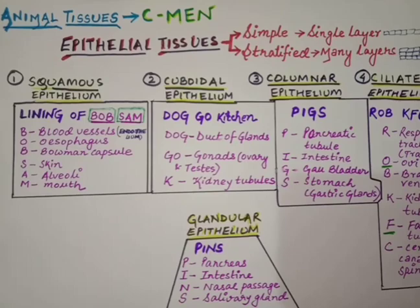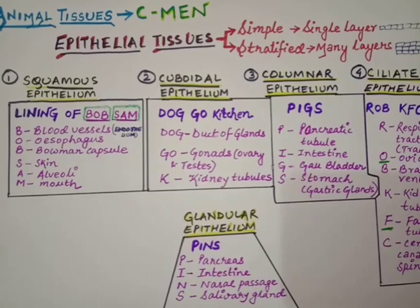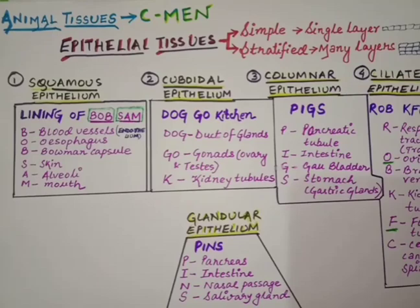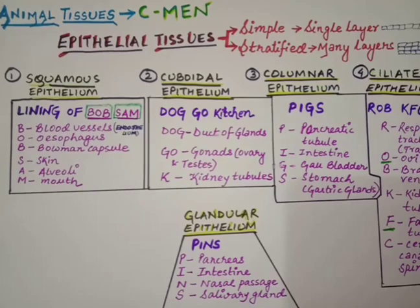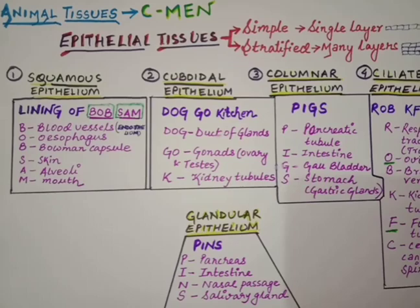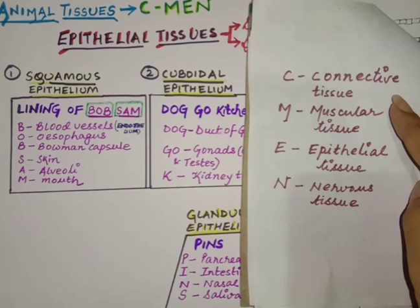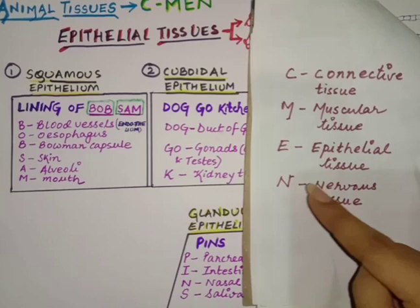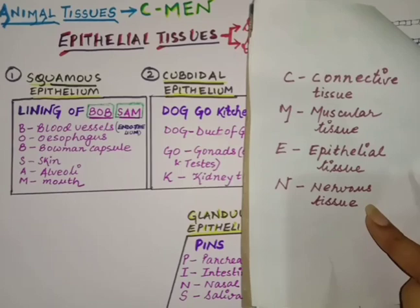In this video we are going to study short tricks — some simple abbreviations which you can use while learning the tissue chapter. This video deals with short tricks related to epithelial tissues. For animal tissues, I have used a small abbreviation: C-MEN. C stands for connective tissue, M for muscular tissue, E for epithelial tissue, and N for nervous tissue. So animal tissue is divided into four types — C-MEN.